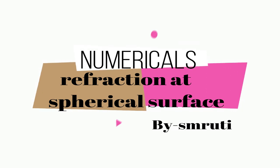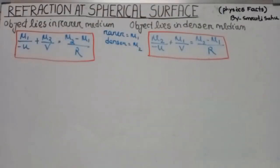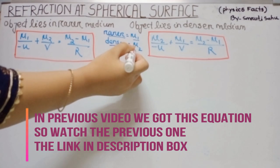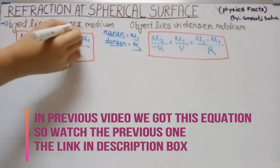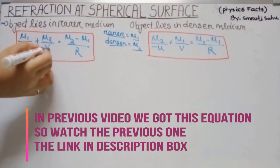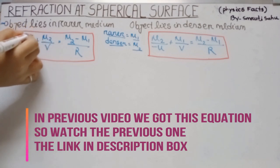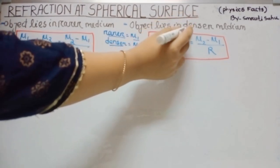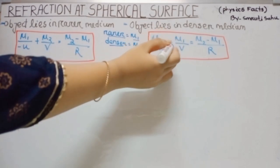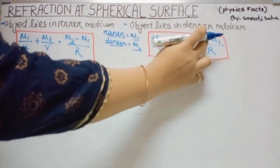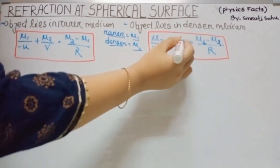Now here we have that equation. If object lies in rarer medium, in rarer medium the refractive index is mu1 and in denser medium the refractive index is mu2. If object lies in rarer medium, the refractive index of rarer medium divided by object distance plus refractive index of denser medium by image distance equals mu2 minus mu1 by r. If object lies in denser medium, then the refractive index of denser medium divided by object distance plus refractive index of rarer medium divided by image distance equals mu1 minus mu2 by r.